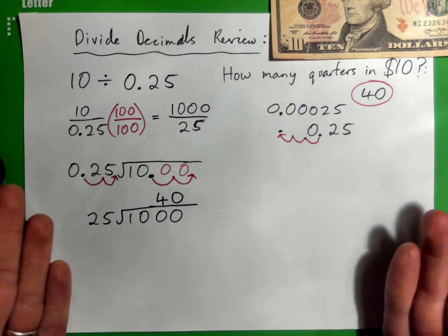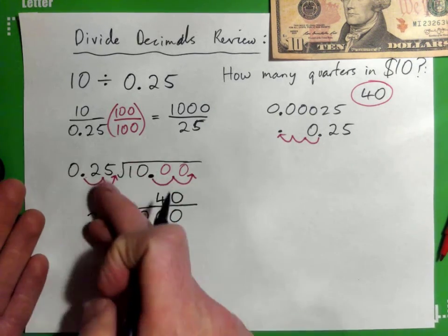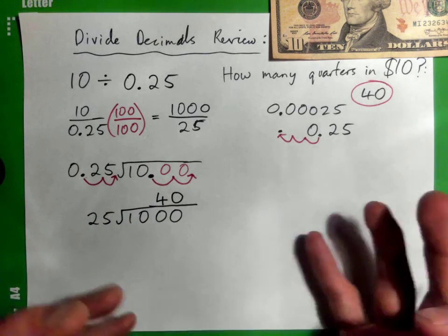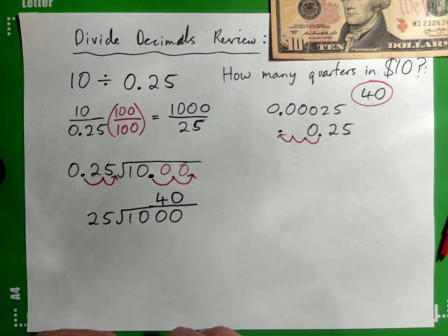And that makes sense because it's 40 quarters in a dollar. So all of this process makes sense in this example anyway.